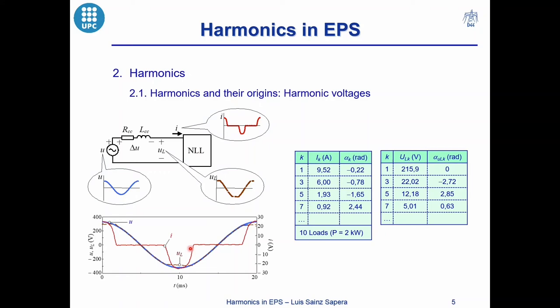The tables show the characteristics of the current and voltage waveforms, that is, the RMS value of the current and the phase angle for each harmonic of the current and voltage.